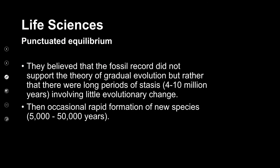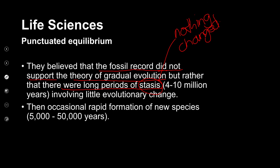They believed the fossil record did not support the theory of gradual evolution. Rather, there were long periods of time — 4 to 10 million years — where there was stasis: nothing changed and organisms remained more or less the same. This would then be punctuated by occasional rapid formation of new species in much shorter periods — between 5,000 and 50,000 years — where there would be rapid change in species.